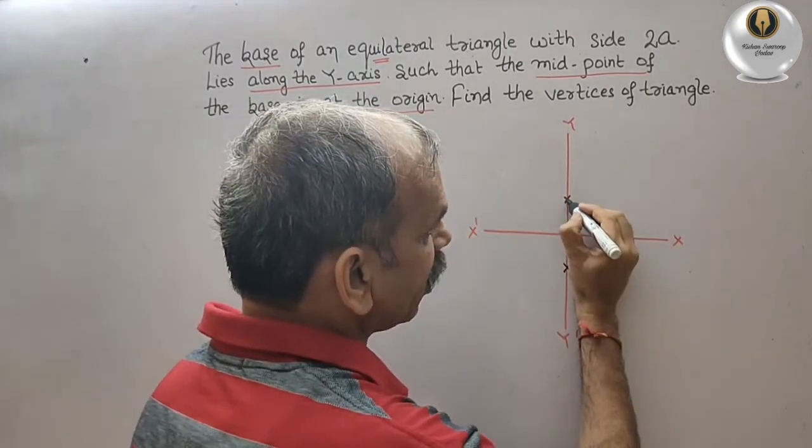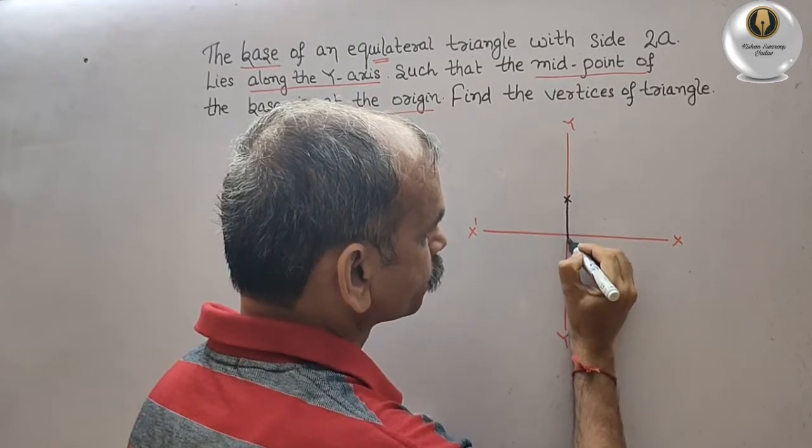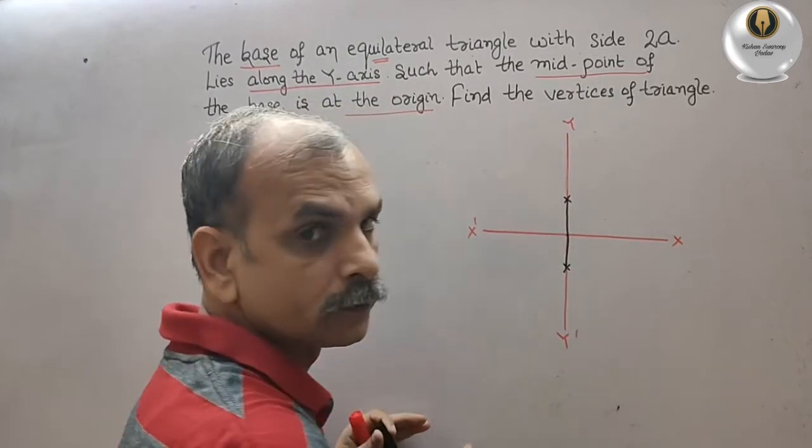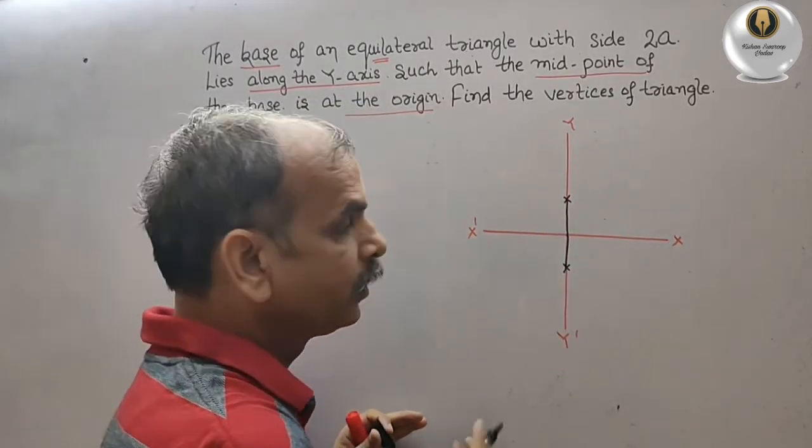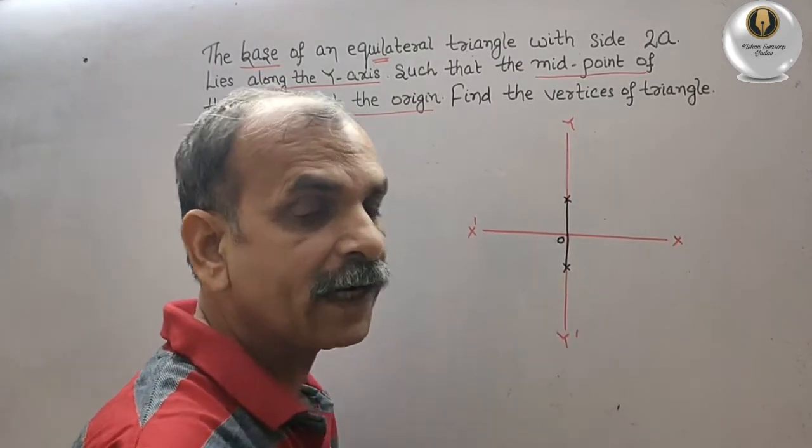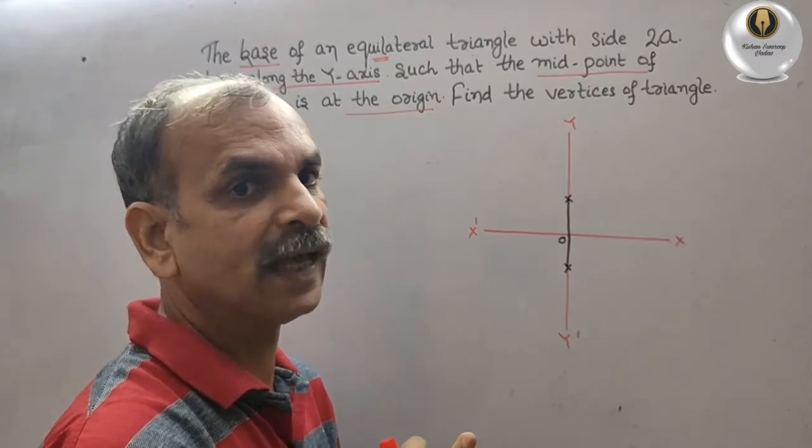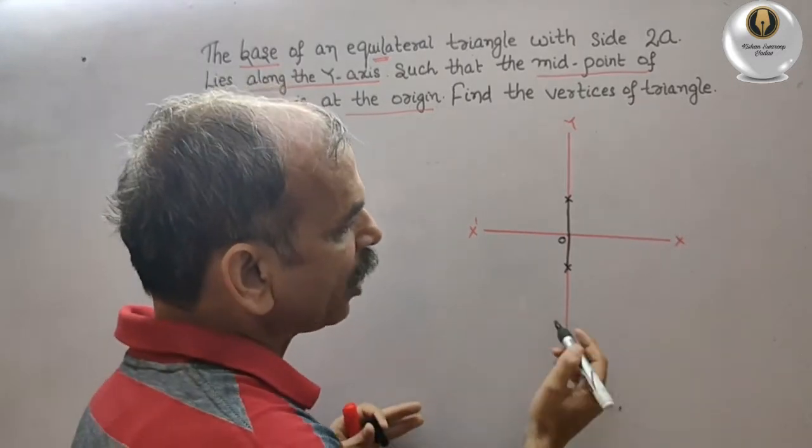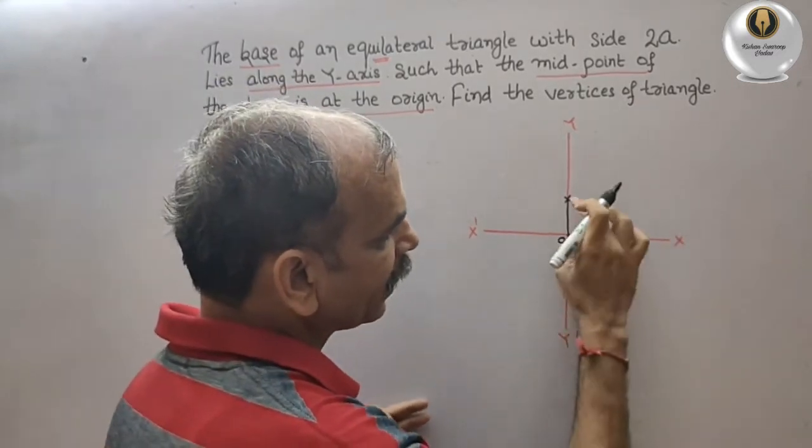So this is the base now. And this is the center. So equilateral triangle, that means the triangle with equal sides is the base.